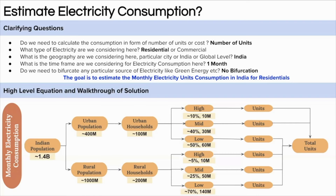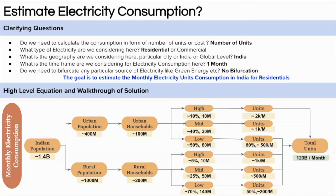A high income urban household consumes around 2,000 units per month. Mid-income urban households consume around 1,000 units per month. For low income urban households, 80% have access to electricity and consume around 500 units per month. For rural areas, high income households consume around 1,000 units per month, mid-income around 500 units per month, and only 50% of low income rural households have electricity access, consuming around 200 units per month. Adding all of it gives around 123 billion units of electricity consumed in one month.